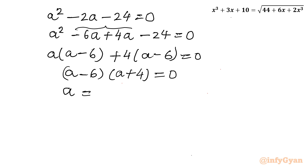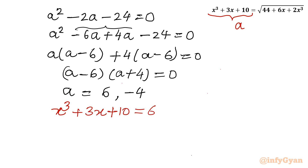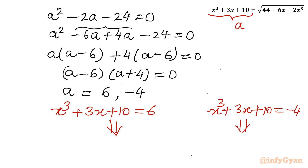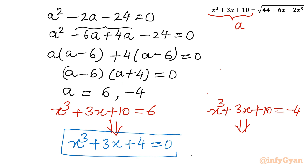So (a − 6)(a + 4) = 0, giving a = 6 or a = −4. Now what was our a? a was the LHS — x³ + 3x + 10. So I will frame two cubic equations: x³ + 3x + 10 = 6 and x³ + 3x + 10 = −4, giving x³ + 3x + 4 = 0 and x³ + 3x + 14 = 0.